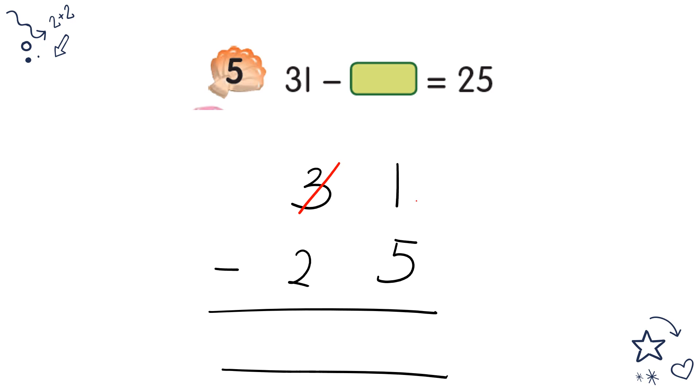Borrow from 3, this left 2, this becomes 11. 11 minus 5 equals 6. 2 minus 2 equals 0. So no need to write 0, you just have to leave it. Or if you want to write 0 also can, but no also can. So the answer is 6.